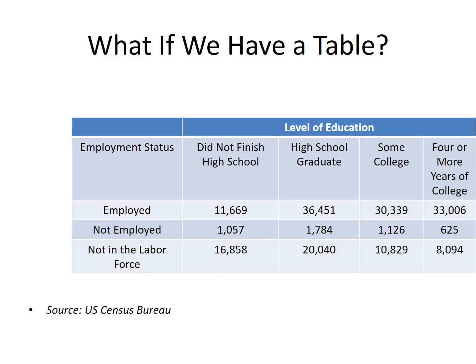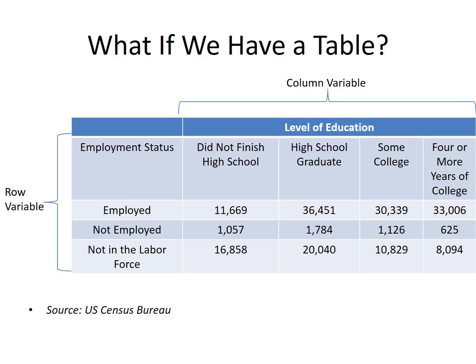Here we have a contingency table. We are comparing the level of education with employment status, and the source of this information is the U.S. Census Bureau. Where we see the brace, we get the row variables — these are the employment status. The column variables, given by the other brace, would be the level of education, and this is what we are going to compare.